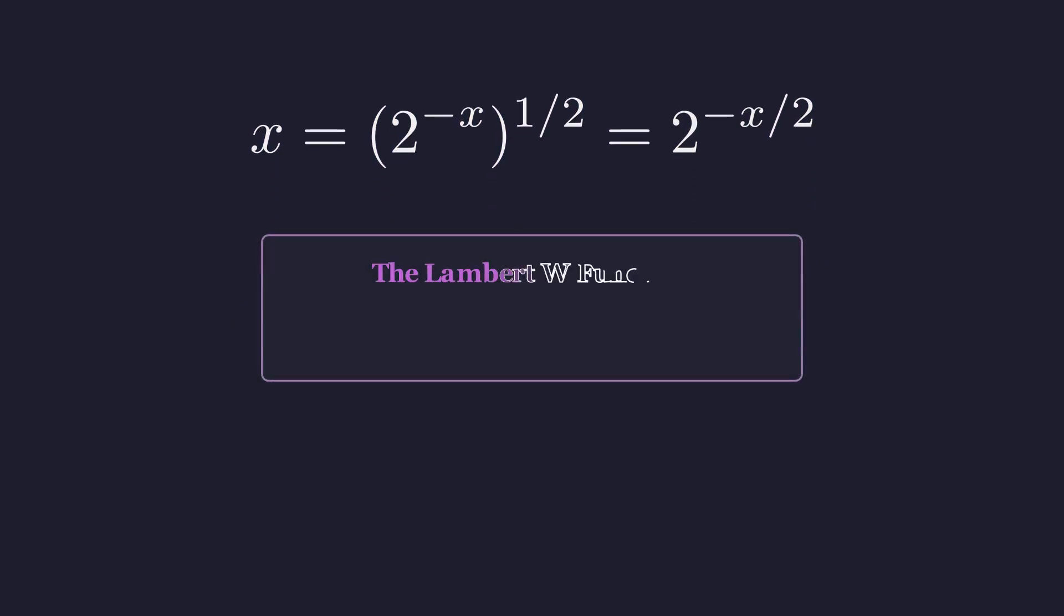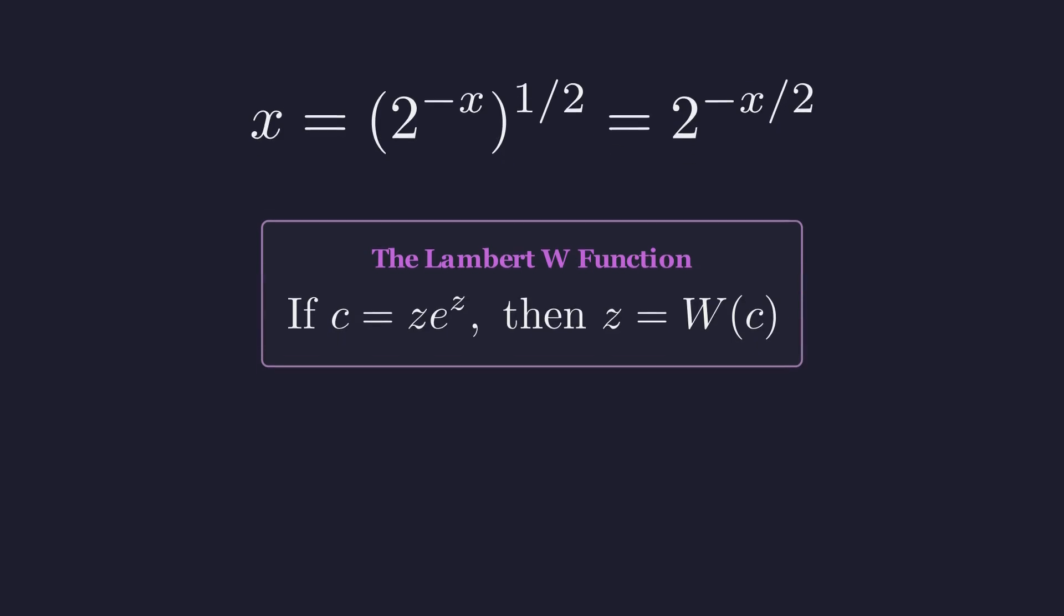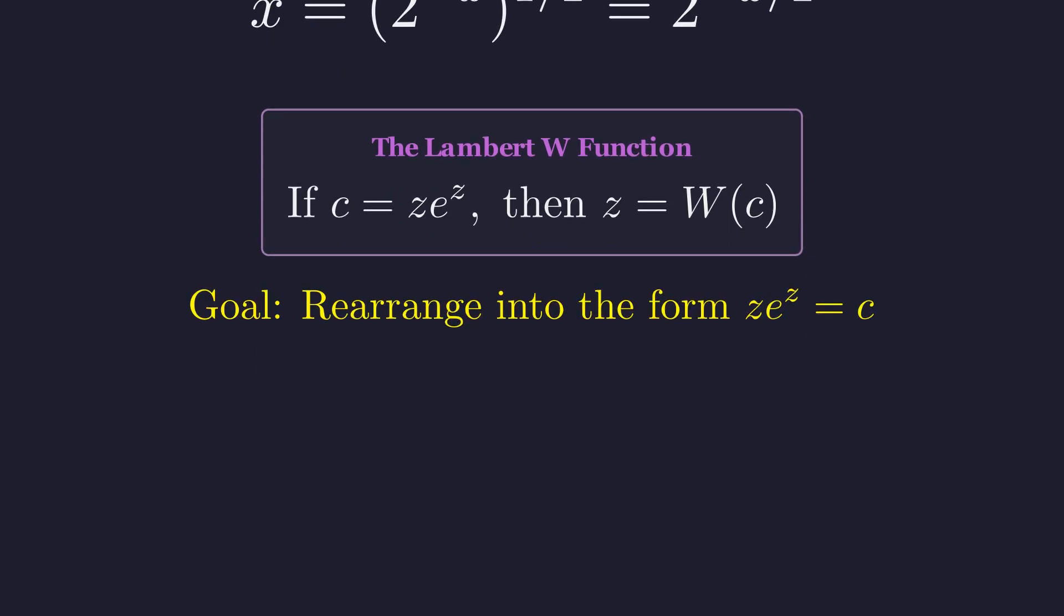This form, with the variable appearing as both a base and in an exponent, cannot be solved with elementary functions. It requires the Lambert W function, which is defined as the inverse of z times e to the z. Our objective is to manipulate our equation into this precise structure.